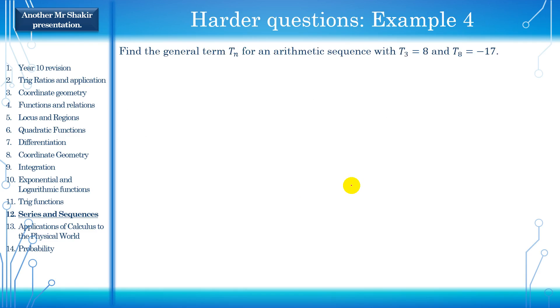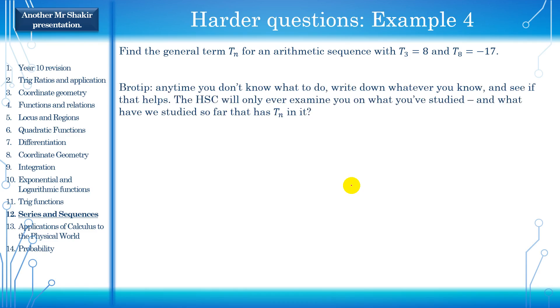Find the general term, the nth term, for an arithmetic sequence where the third term is equal to 8, and the eighth term is equal to negative 17. And a quick note, I've seen these type of questions in trial papers and HSC exams a fair bit. They're very, very common. This particular type of question is very common. Okay, so bro tip, anytime you don't know what to do, write down whatever you know, and see if that helps. The HSC will only ever examine you on what you've studied. And what have we studied so far that has the nth term in it? Well, the nth term formula.